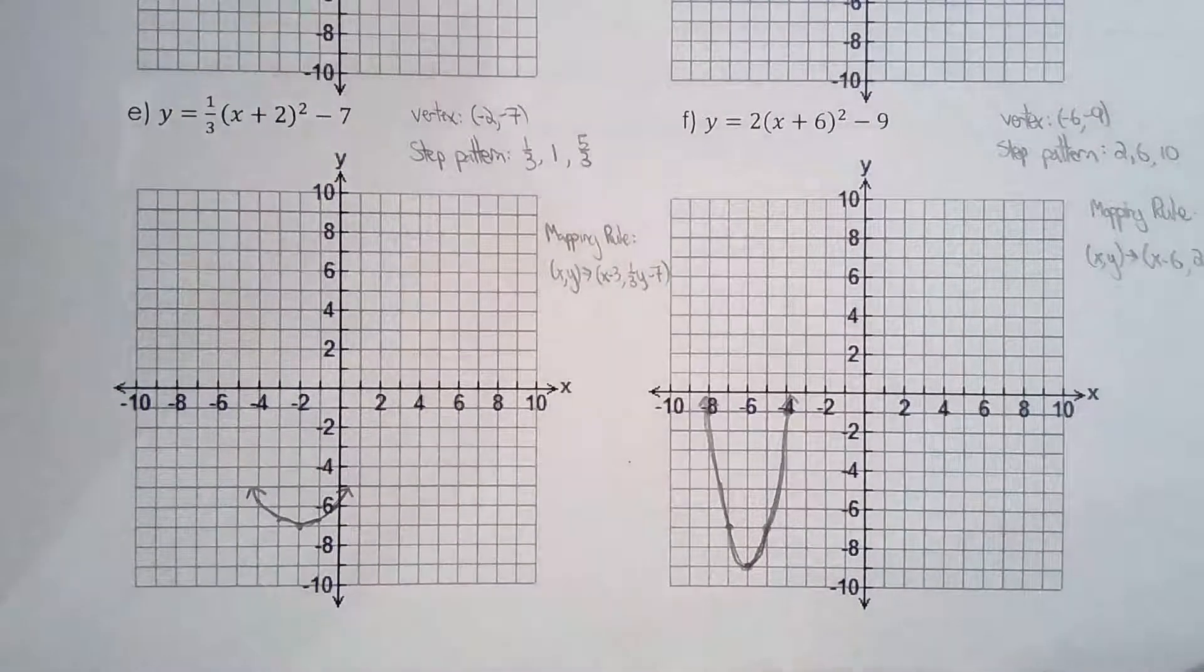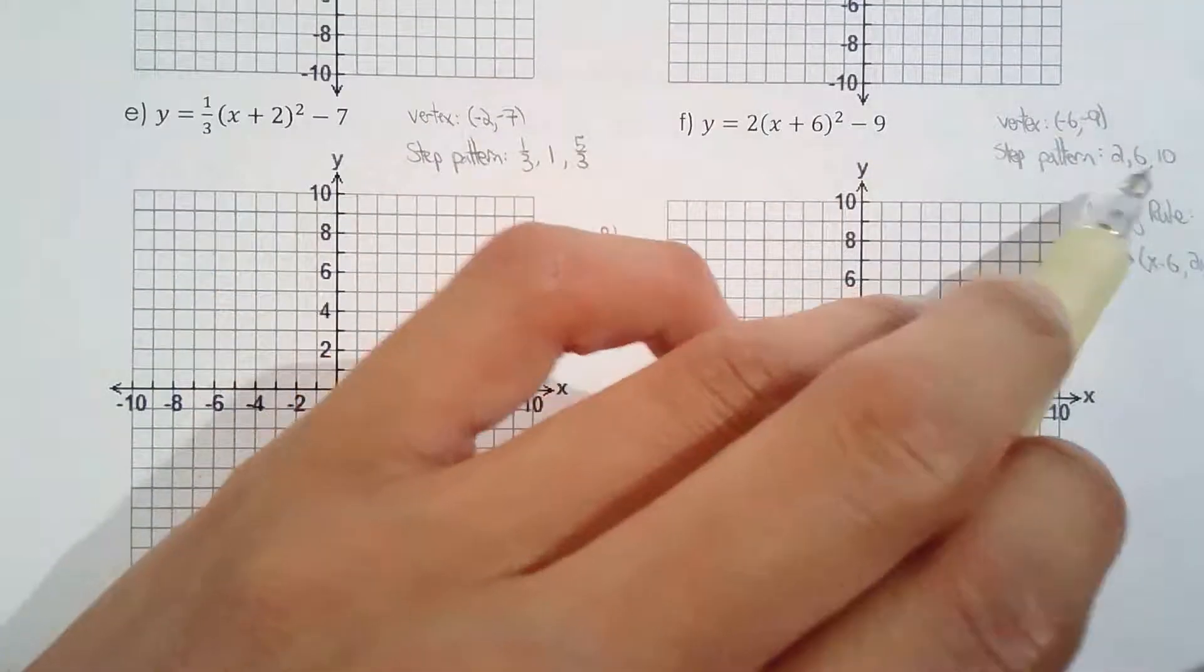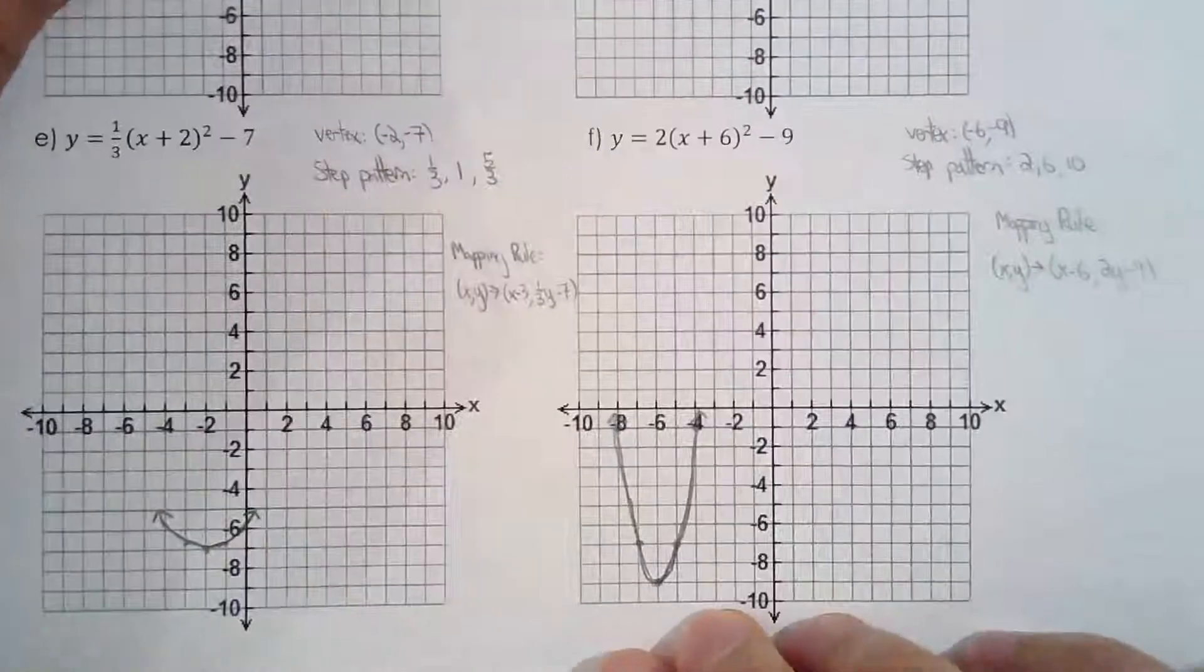F was pretty straightforward, to be honest with you. Vertical stretch by a factor of two, that's why the step pattern is now 2, 6, 10. And there's your mapping rule.